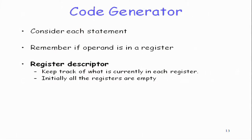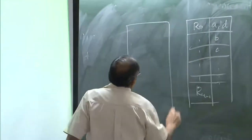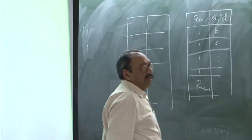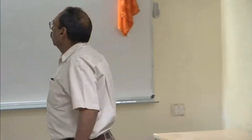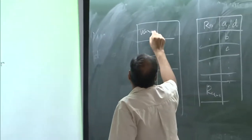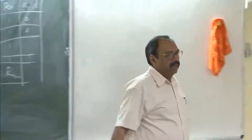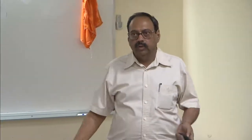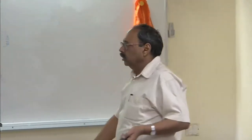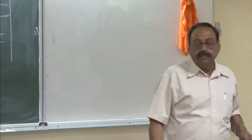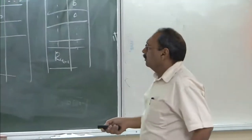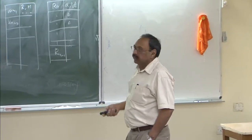The second descriptor is the address descriptor. For each variable — either a user variable from the symbol table or a temporary — we keep information about the places where that variable is available. A variable may be available in both a register and memory simultaneously. The location might be a register, stack, memory address, or a set of these locations.